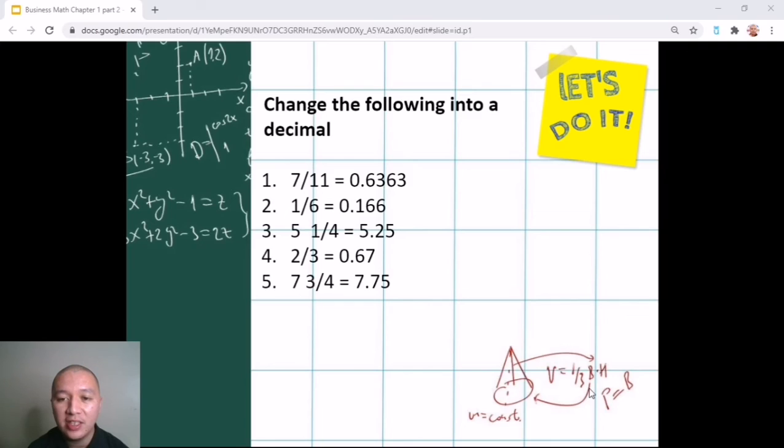We have a mixed fraction of 5 and 1 fourths that we can convert into a decimal of 5.25 simply by dividing the numerator by the denominator. And then same goes for number 4, 2 divided by 3 is 0.67.